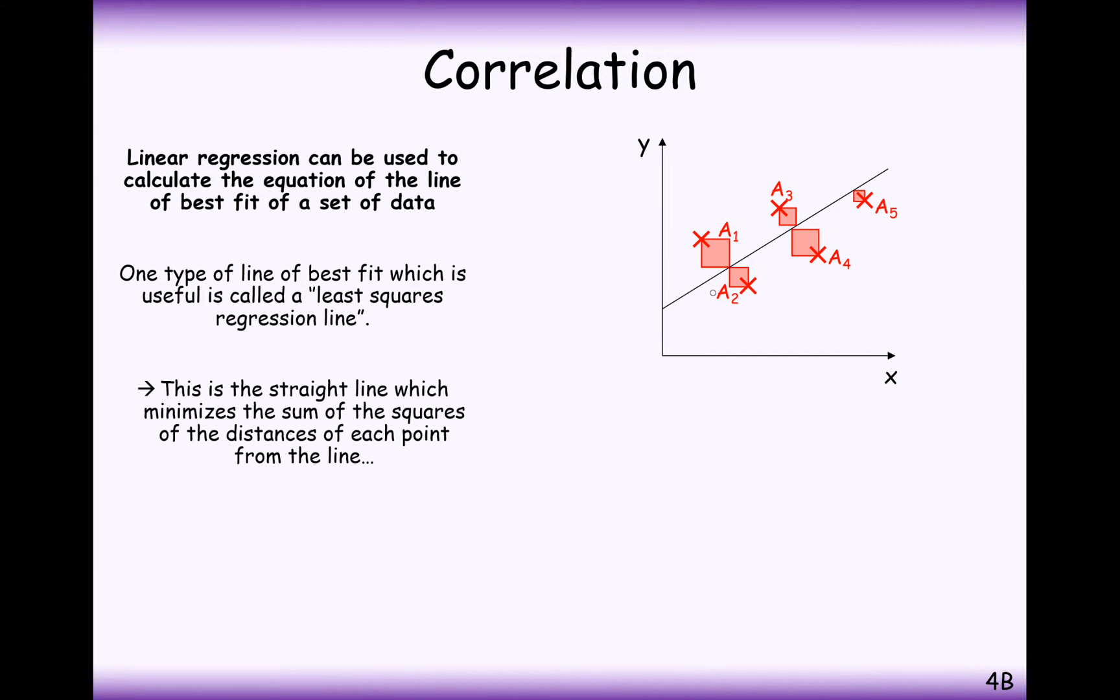Linear regression is creating a line of best fit for a set of data. And one of the best ways of creating a regression line here, this straight line here from these five coordinates, is a least squares regression line.